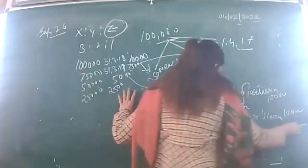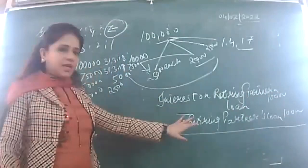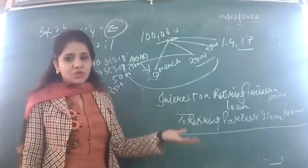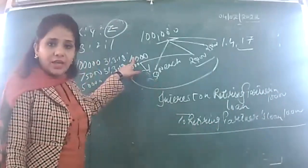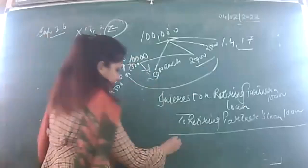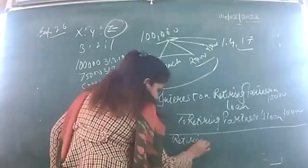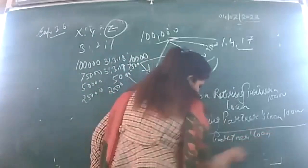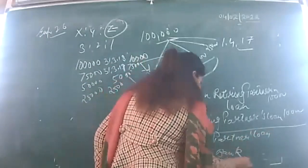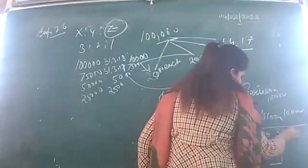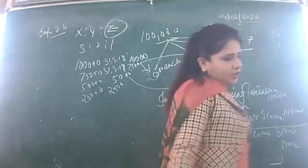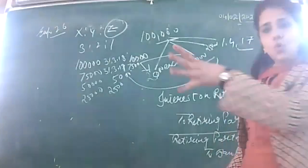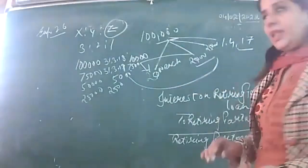For Z's loan account: pay first installment 35,000; second installment 32,500; third installment 30,000; fourth installment 27,500. Z's capital account transferred to Z's loan account — 1,00,000. Then each year interest entry is passed and installment paid to bank by cheque.